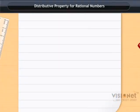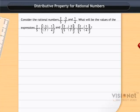Distributive Property for Rational Numbers. Look at the expressions of 2/5 minus 3/7 and 1/4. Find the value of the expression.